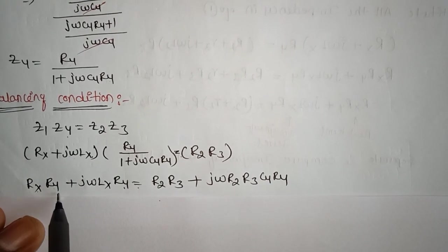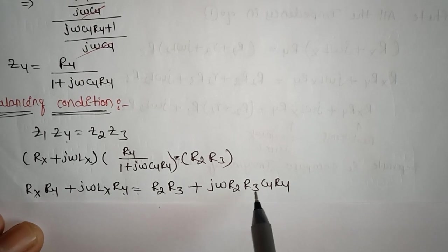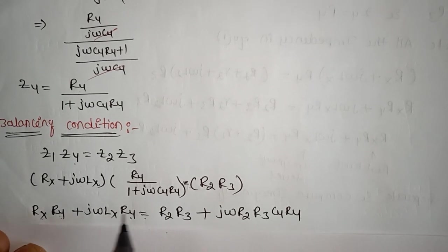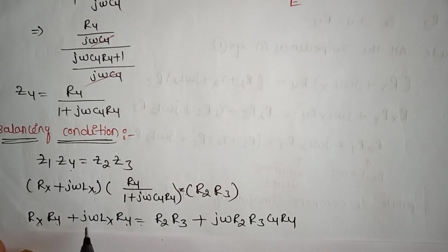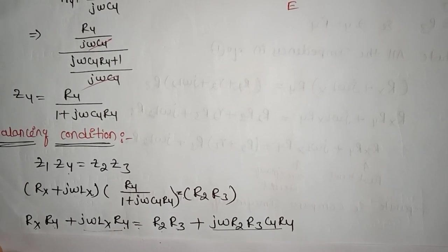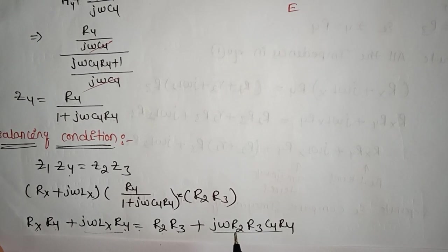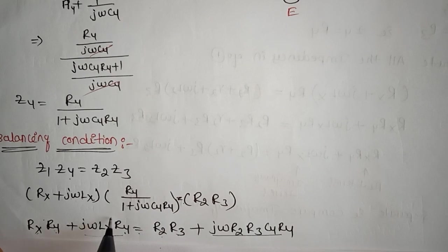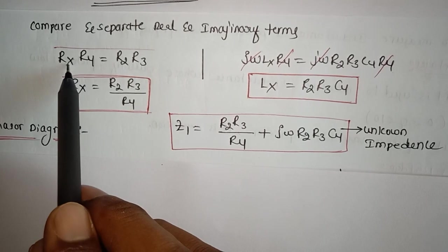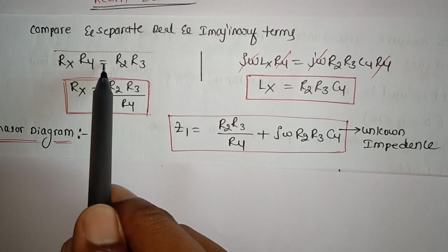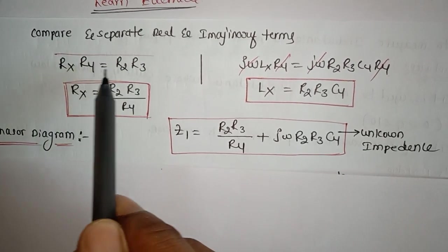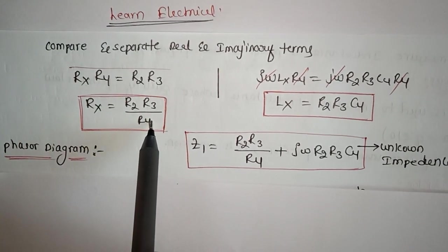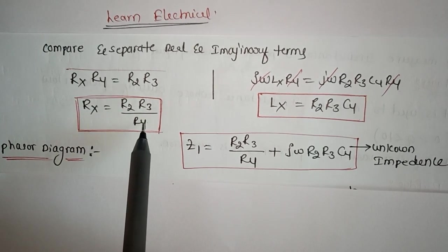This equation contains real and imaginary terms. Rx·R4 and R2·R3 are real terms; the jω terms are imaginary. Equating real terms: Rx·R4 = R2·R3, therefore Rx = R2·R3 / R4. This is the value of the unknown AC resistance to be measured.